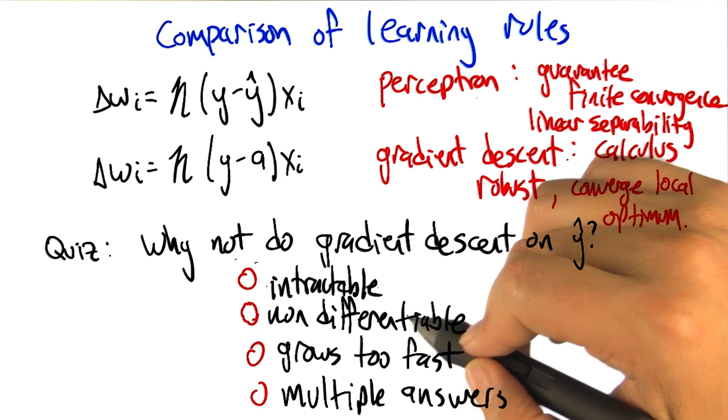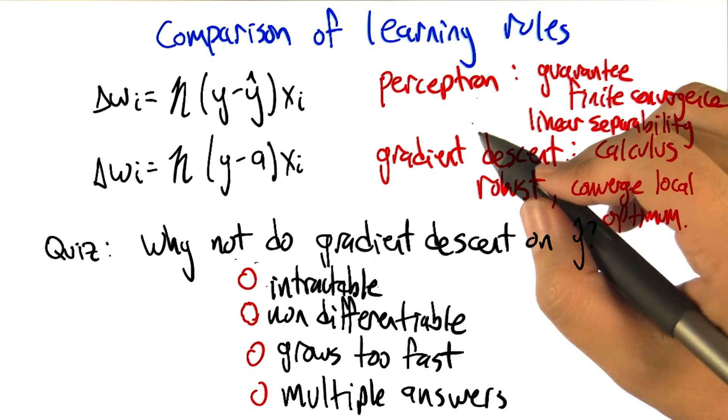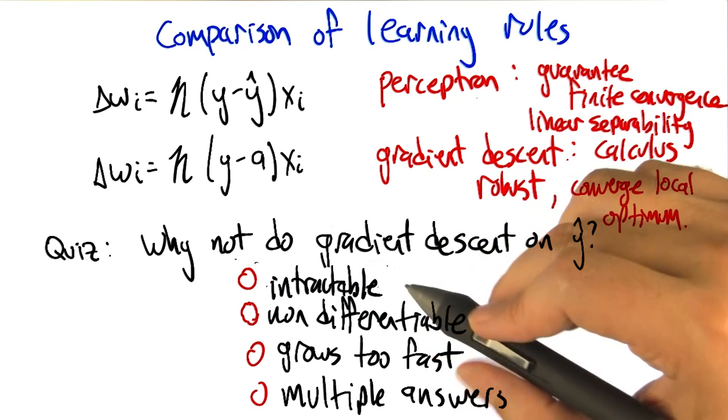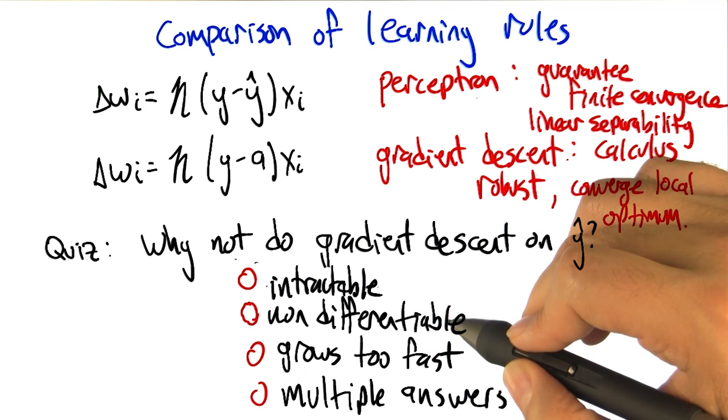Another possibility would be, well, to do the gradient descent you have to be able to take the derivative and if we use it in this form it's not differentiable. So we can't take the derivative.